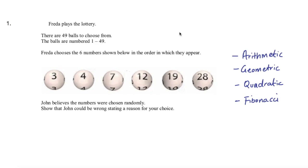Hey, what's up guys, welcome to another video. In this video I'll be going through the question on the screen. The question says Frida plays the lottery. There are 49 balls to choose from, numbered 1 to 49. Frida chooses the six numbers shown below in the order in which they appear. John believes the numbers were chosen randomly. Show that John could be wrong, stating a reason for your choice.